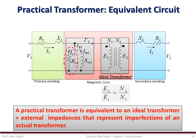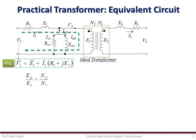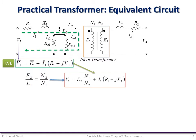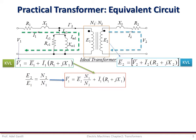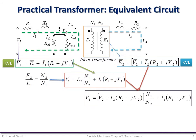So a practical transformer is equivalent to an ideal transformer plus external impedances that represent imperfections of the actual transformer. Now, using Kirchhoff's voltage law in the primary circuit loop, we can obtain this equation. If we apply Kirchhoff's voltage law to the secondary loop circuit, we can obtain this equation, which if we combine with the previous equation, we can get this one.